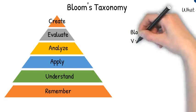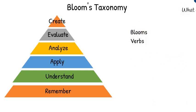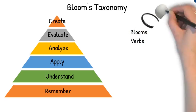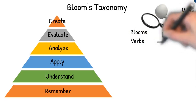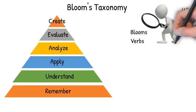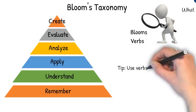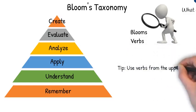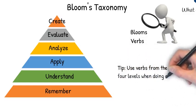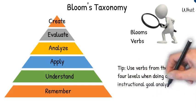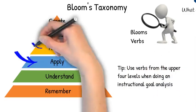Bloom's Taxonomy is used to list a series of verbs associated with each level. These verbs are then used in the creation of observable goals and learning objectives. There are plenty of examples on the internet — just search for Bloom's verbs. For goal analysis, you should concentrate only on the upper levels of Bloom's: specifically apply, analyze, evaluate, and create.